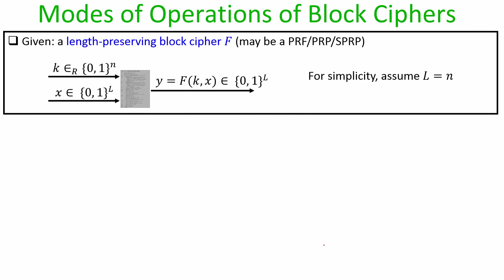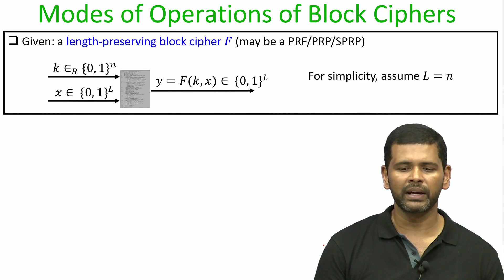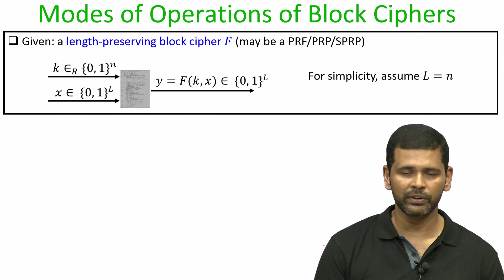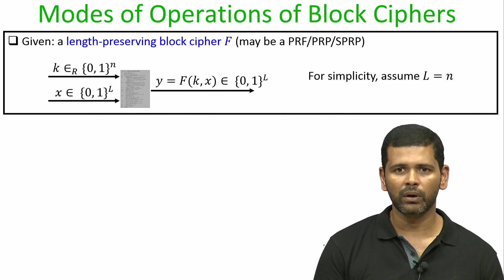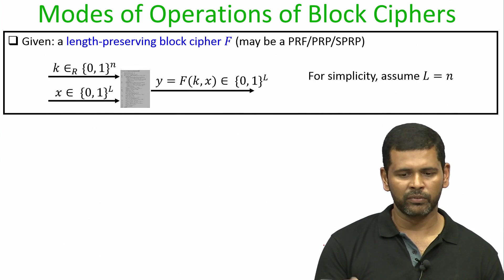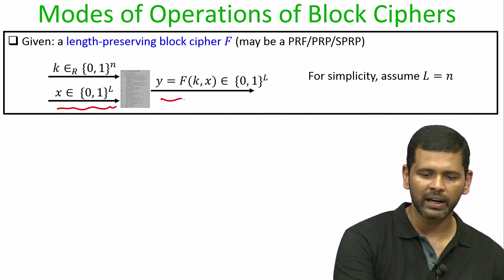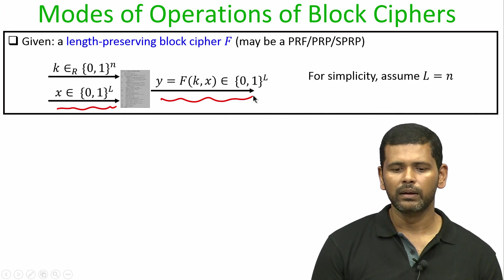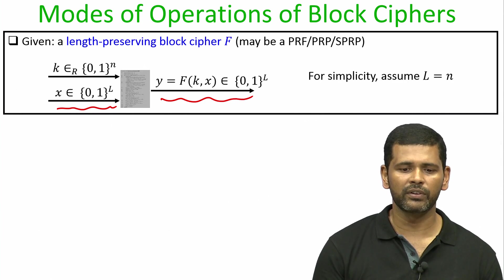That leads us to what we call modes of operations of block ciphers. The goal is: given a keyed function — which could be a pseudo random function, pseudo random permutation, or strong pseudo random permutation — and a length-preserving construction where the block input size and output size are both big L (for simplicity assumed to be n, but could be any polynomial function of the security parameter).